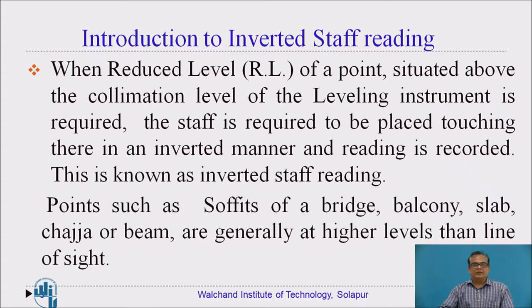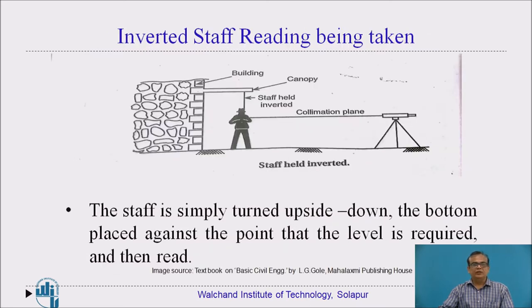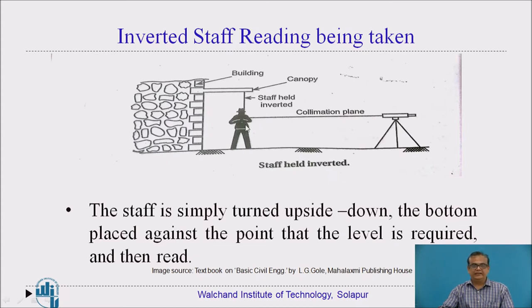Points that are above the collimation plane level of the instrument include soffits of a bridge, balcony, slab, chajja, or beam. Here we can see inverted staff reading being taken in this particular image. This is a building whose canopy is projecting. There is no alternative but to keep the staff in inverted manner. Here is the instrument collimation plane level. The zero position of the staff will be touching to the point whose RL is required, and the reading is taken. This is inverted staff reading.